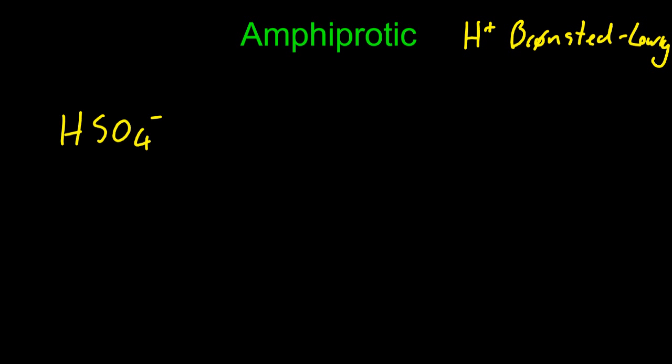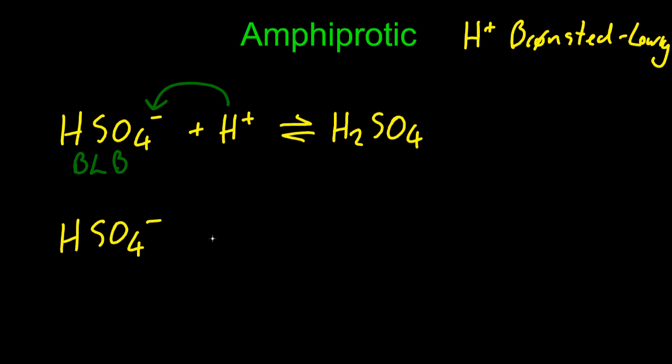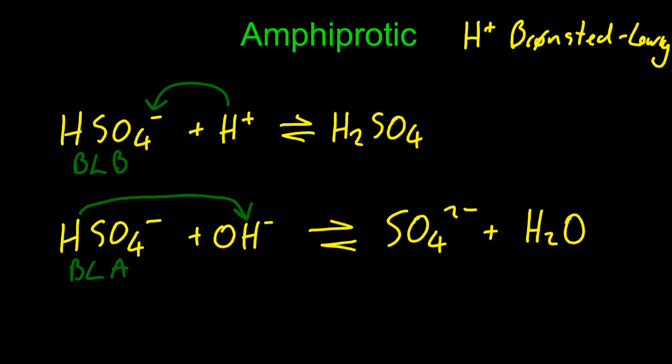The HSO4- ion can receive a proton, making it a Bronsted-Lowry base. The HSO4- ion can also lose a proton, making it a Bronsted-Lowry acid. Since the HSO4- ion can lose or gain a proton, it's amphiprotic, which means it must also be amphoteric, since everything amphiprotic is amphoteric.